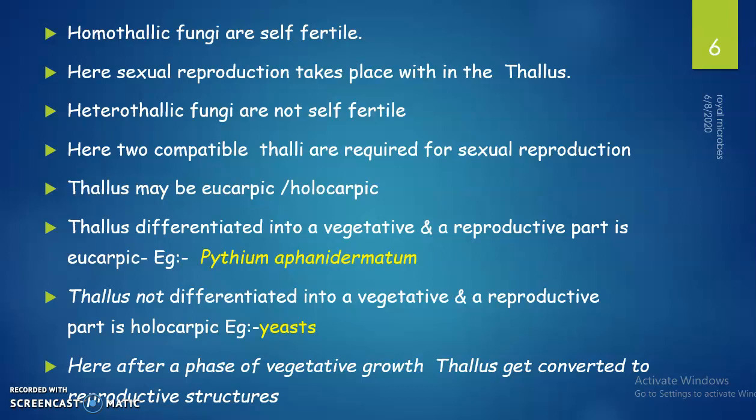The thallus may also be eucarpic or holocarpic. Eucarpic means the thallus is differentiated into a vegetative and a reproductive part — for example, Pythium. If the thallus is not differentiated into vegetative and reproductive parts, it is called a holocarpic thallus. In holocarpic fungi, after a phase of vegetative growth, the thallus itself gets converted into reproductive structures — for example, yeast.